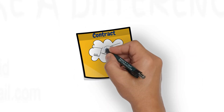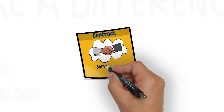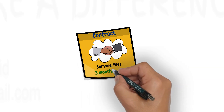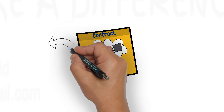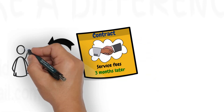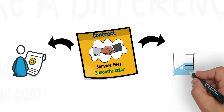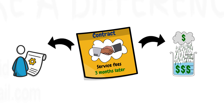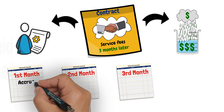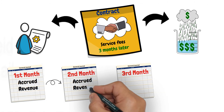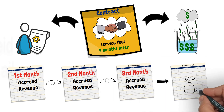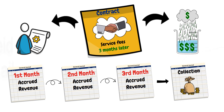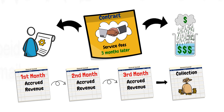A company signed a contract to provide services for a period of three months. The service fees will be collected at the end of the third month. As the company keeps providing the service during the contract period, revenue keeps accruing to the company. At the end of each month, an adjusting entry is made to recognize the revenue that accrued during the month, then the collection of cash is recorded later when it is received from the customer at the end of the contract period.